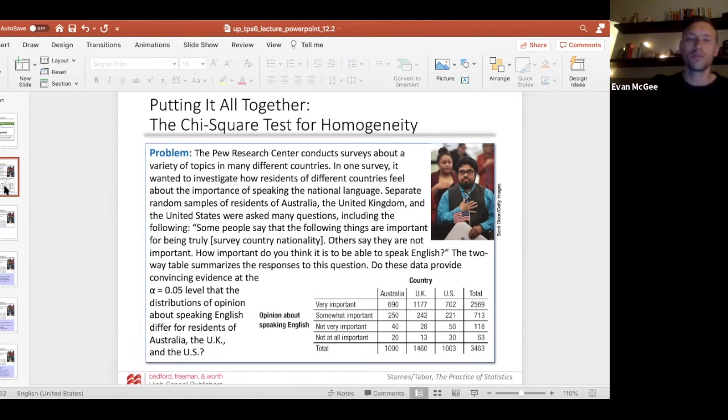Separate random samples of residents from Australia, the United Kingdom, and the United States were asked many questions, including the following.